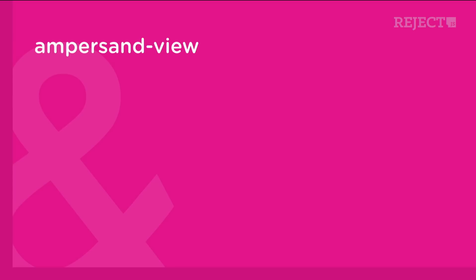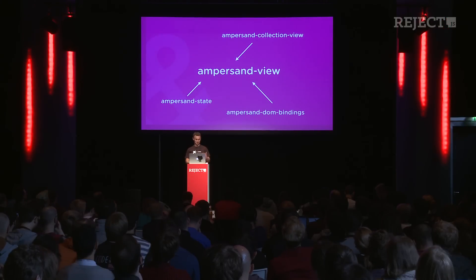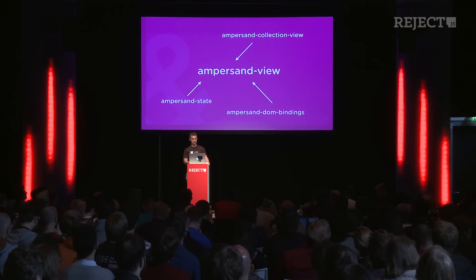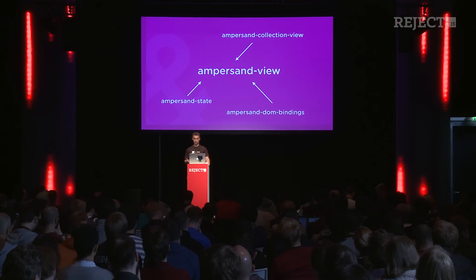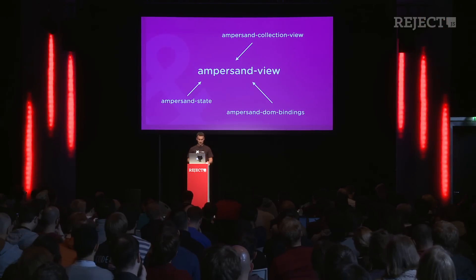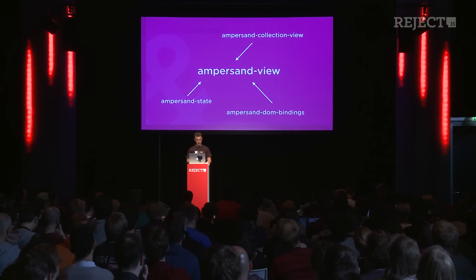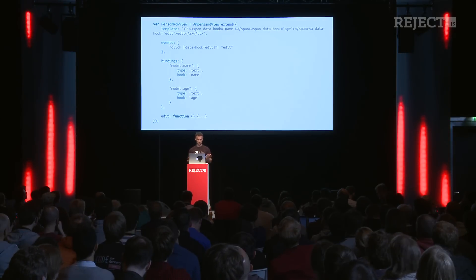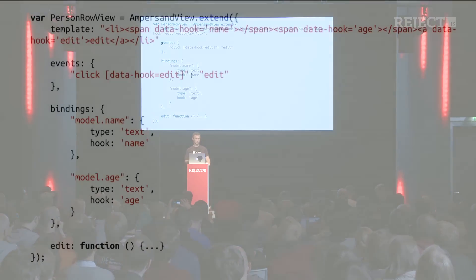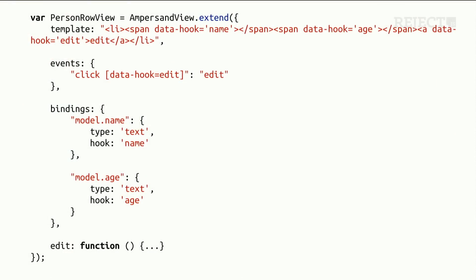Views — there are plenty of views, not just one like people are used to. Ampersand view is a mix of ampersand state, DOM bindings, and collection view. Collection view is included because rendering collections is a really common task. DOM bindings are the way you can tell the view which data from your model should be used — this could be compared to Angular two-way data binding, but it's not quite two-way binding. The basic view has a template, which is a string that can only have one root element. You can use either a string or a function, and you don't have to precompile your templates. There are data hooks used for data bindings, and you can also handle events.